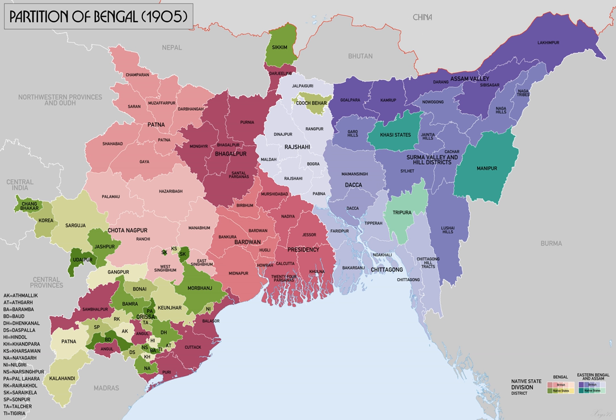Moreover, the capital, Calcutta, was also the capital of the entire British India. With the growing efforts of the Indian freedom fighters to secure the independence of India, Lord Curzon decided to address both these problems by partitioning Bengal into two entities, which would result in a Muslim majority in the eastern part and a Hindu majority in the western part. This he hoped would reduce the administrative pressures.